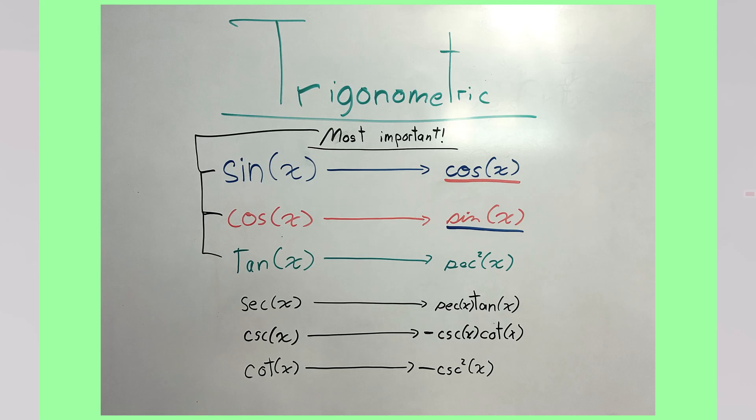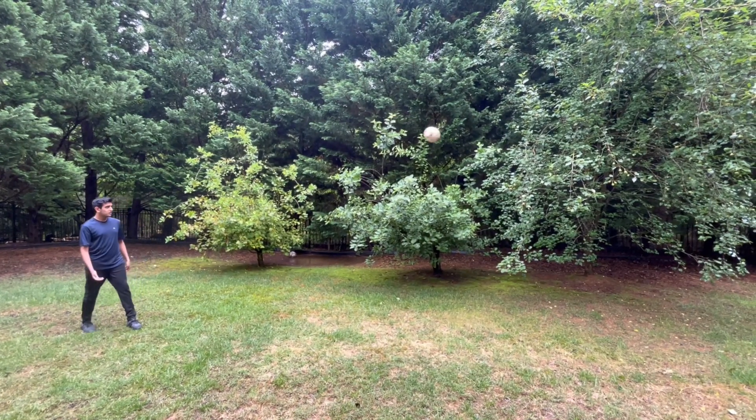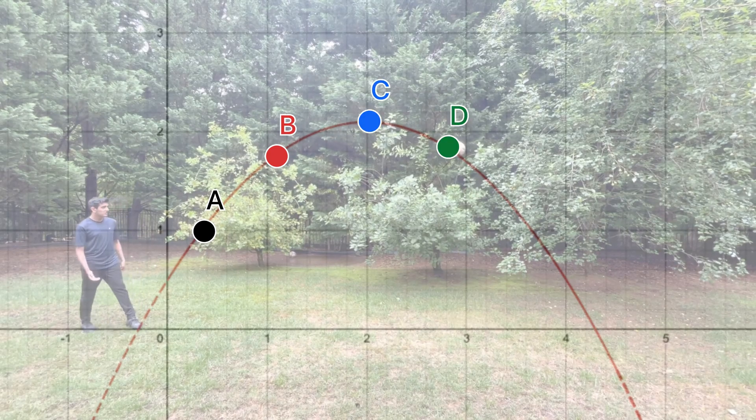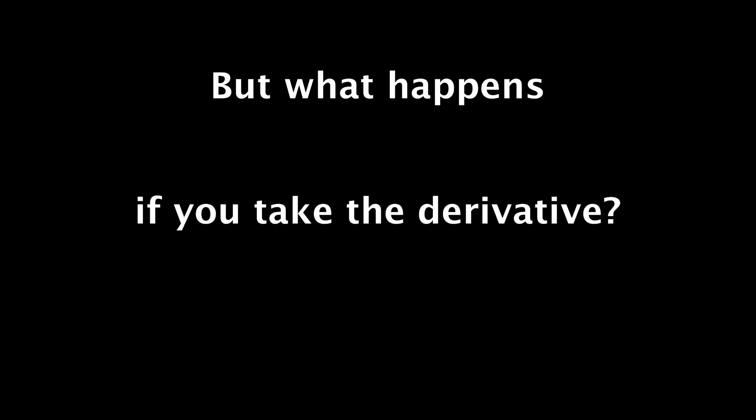However, there are a lot more derivative rules like trig and exponential. Along with that, there are also real-life applications for derivatives. One of the big ones is motion. So let's say I kick a soccer ball and model it with a function. The graph would just show the position of the ball at different times, but what happens if you take the derivative?